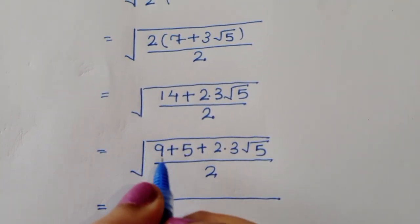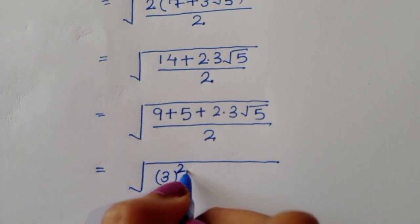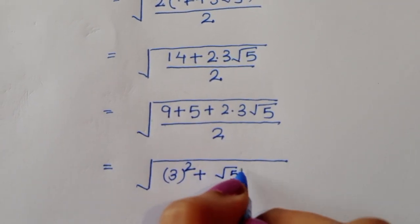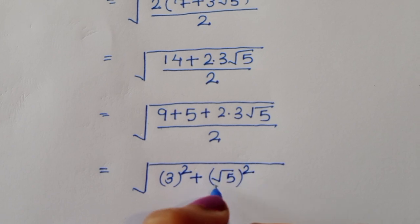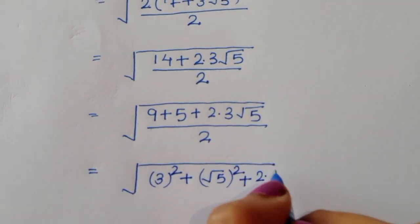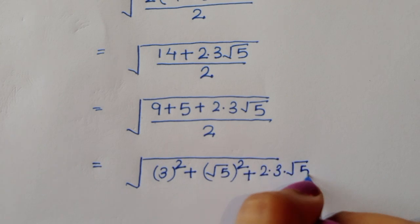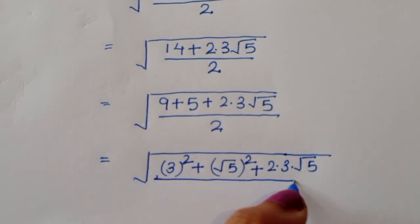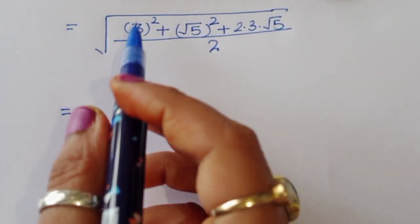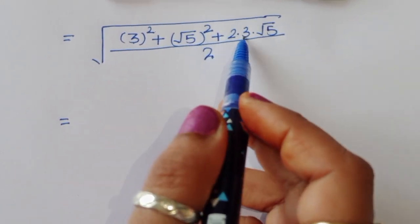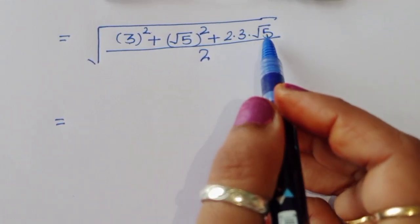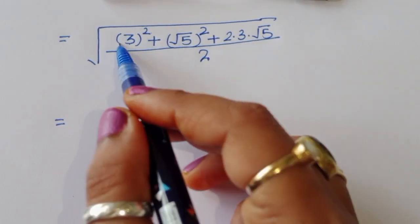Now, 9 can be written as 3 squared, and 5 can be written as (square root of 5) squared. So we have 3 squared plus (square root of 5) squared plus 2 times 3 times square root of 5, all divided by 2. You can see this matches the form a squared plus b squared plus 2ab, where a equals 3 and b equals square root of 5.